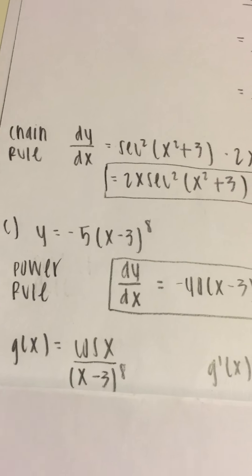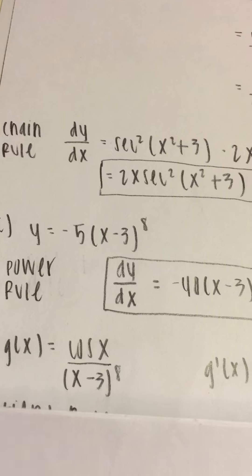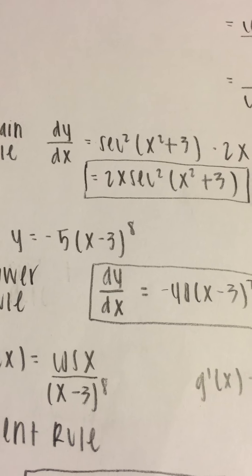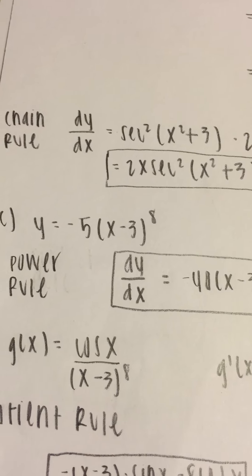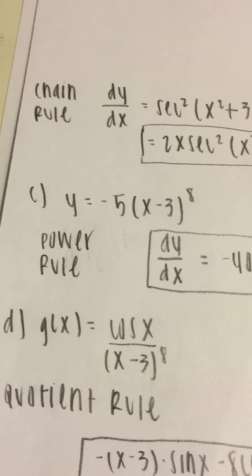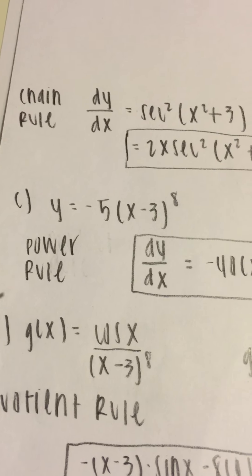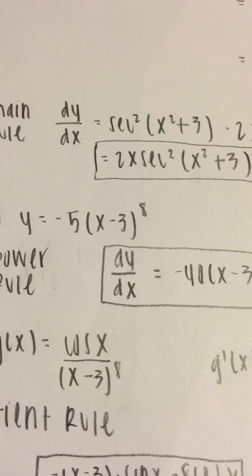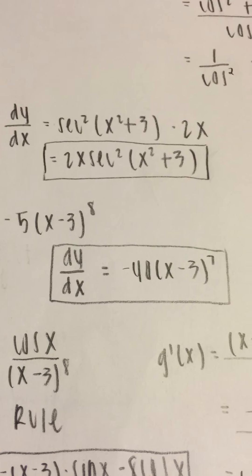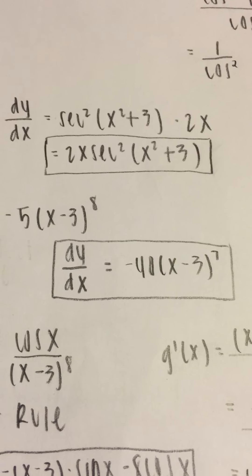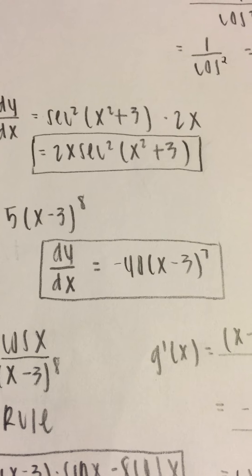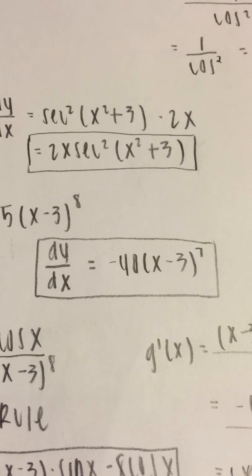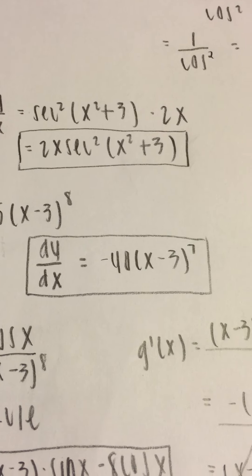For C, we get y equals negative 5x minus 3 to the eighth power. To solve this, we use the power rule again. We multiply 8 by negative 5 to get negative 40, and subtract 1 from the exponent to get 7. So the answer is negative 40 times x minus 3 to the seventh power.